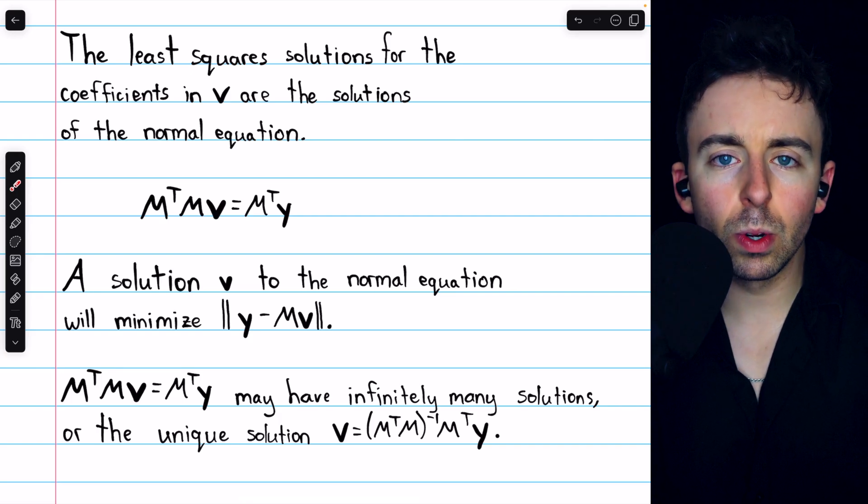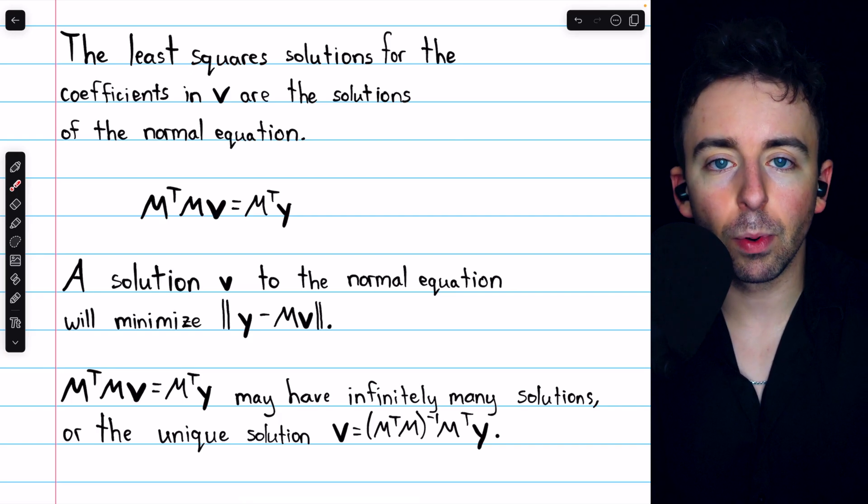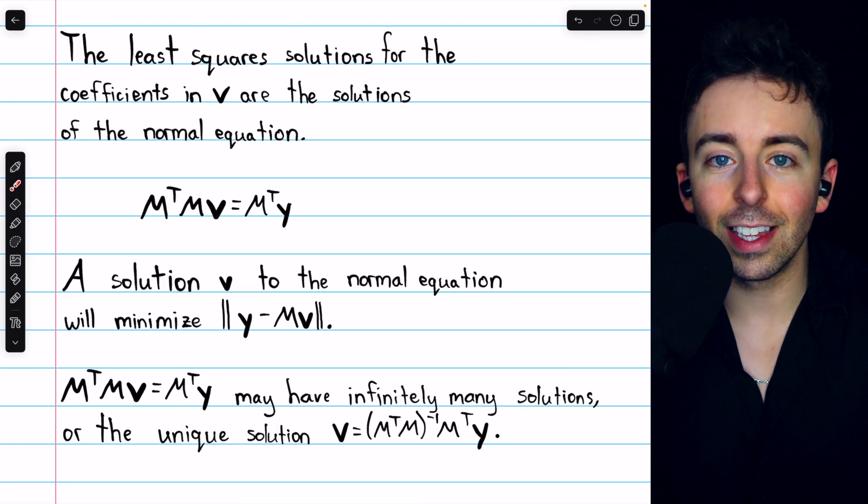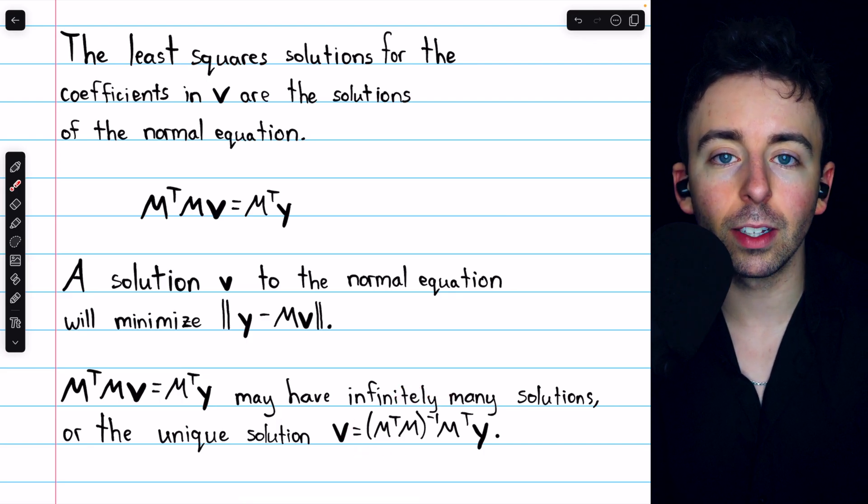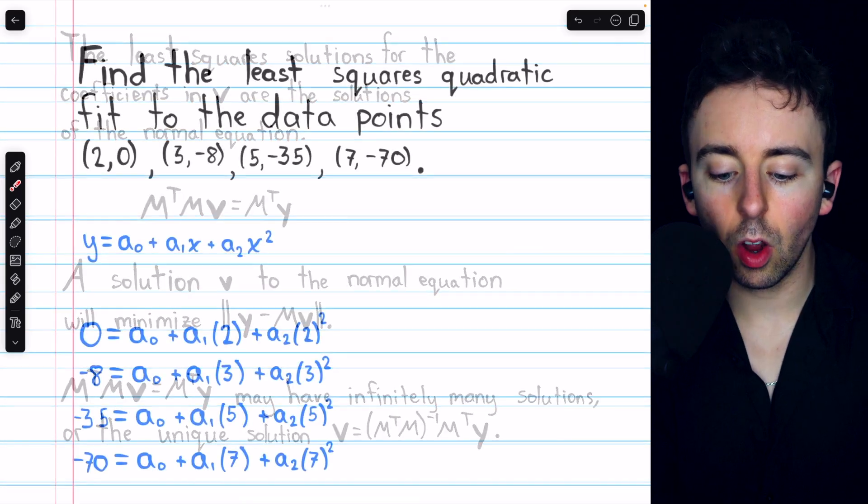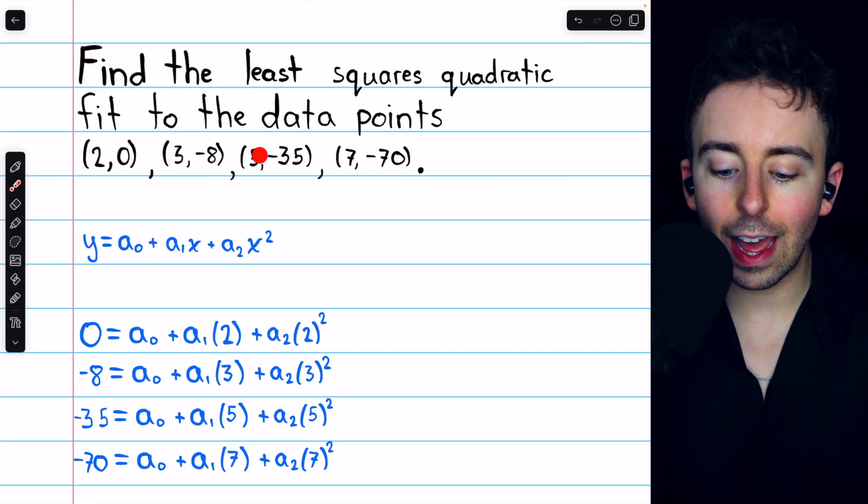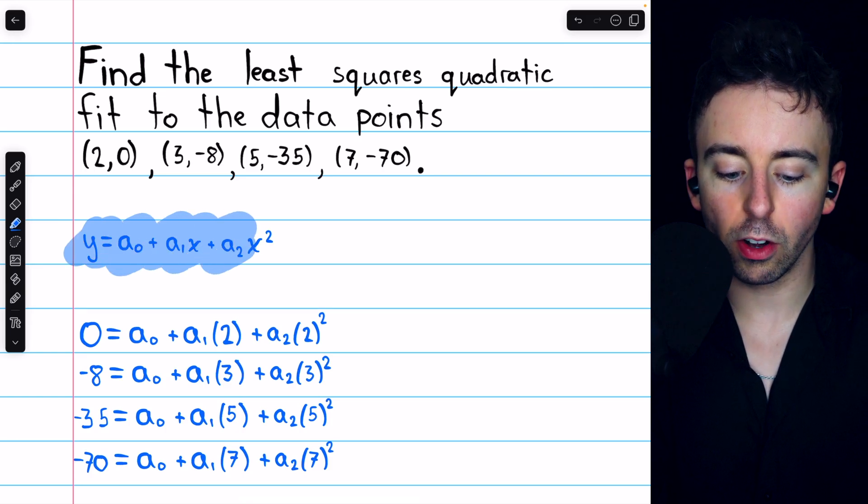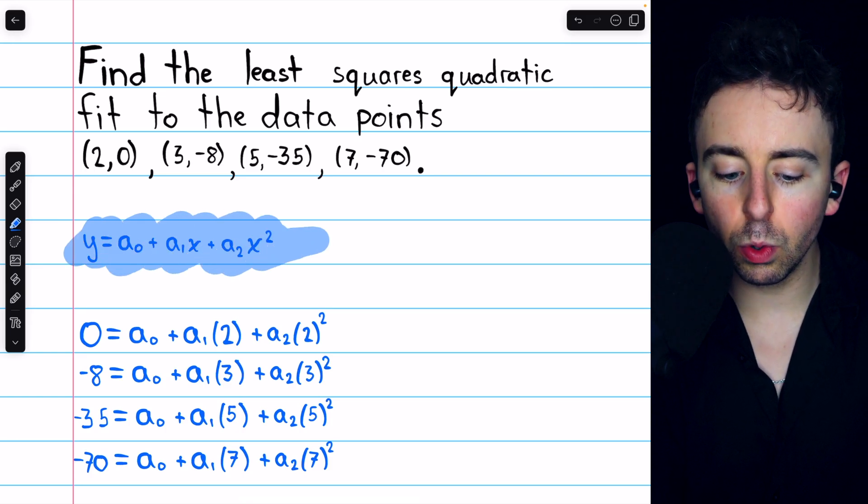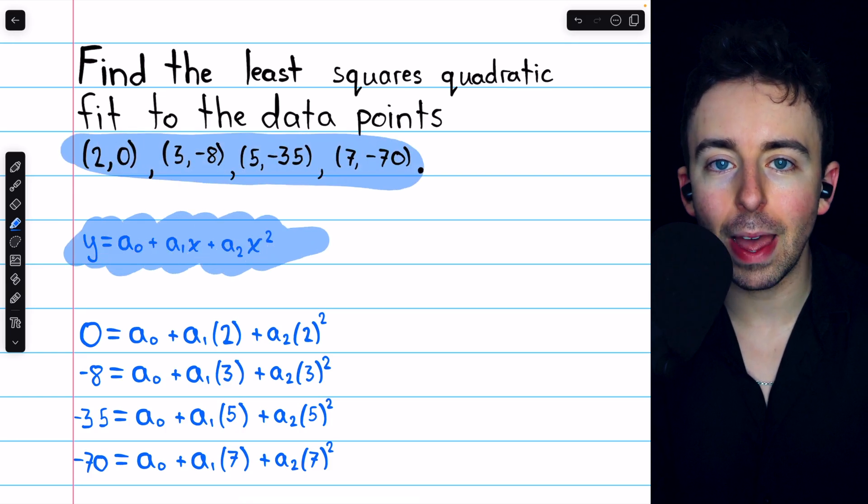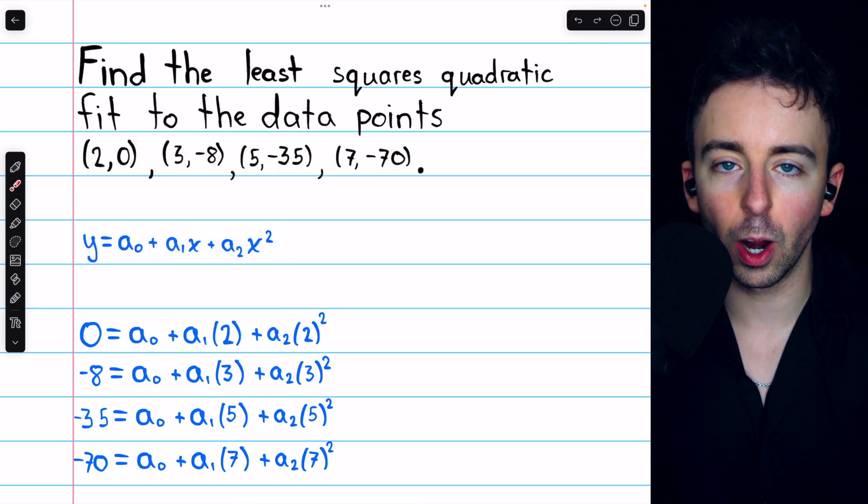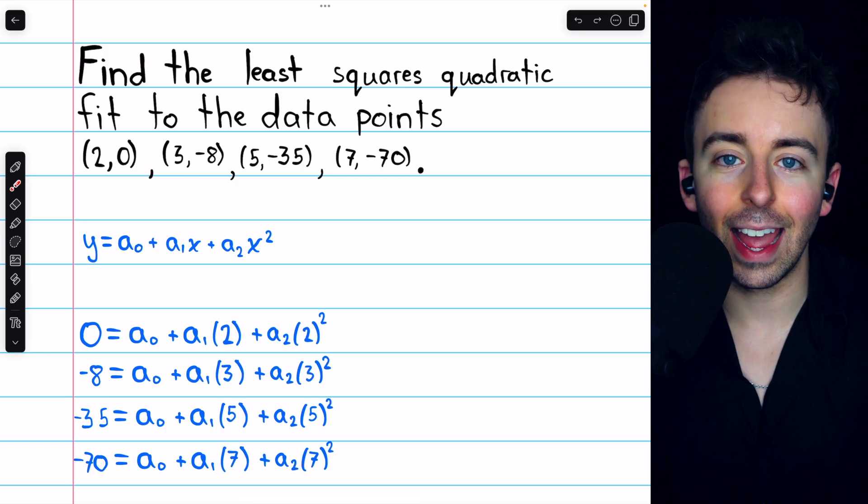So let's go through an example. We'll have four data points, and using this solution for the normal equation, we'll find the best fitting polynomial to that set of data points. So we have these four data points, and we're going to try to find the coefficients for a quadratic polynomial, which will fit these data points best. Again, the unknowns are these coefficients, a0, a1, and a2.